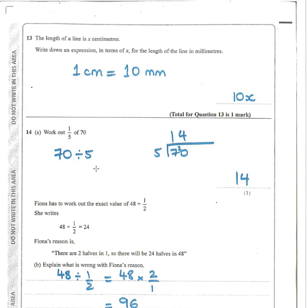Work out one fifth of 70. One fifth means divide by 5. One way: 70 divided by 5 is 14. An easier mental method: since 5 is half of 10, divide 70 by 10 first to get 7, then double it because 5 goes in twice as many times as 10 — so 70 divided by 5 is 14.